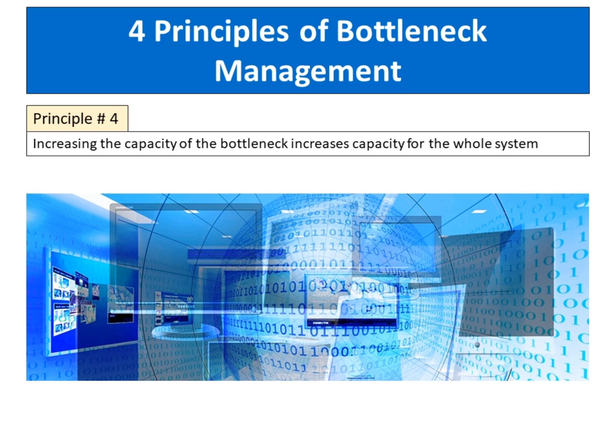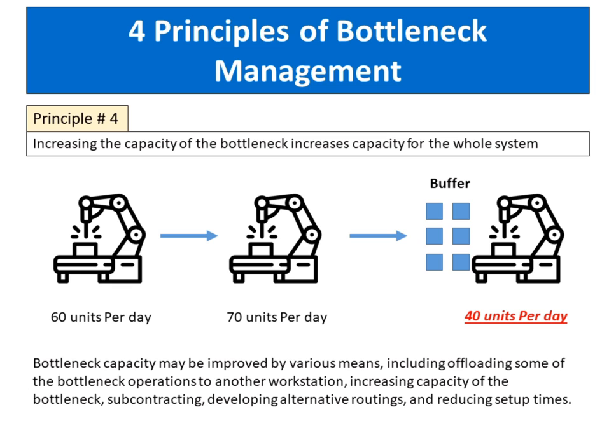Principle number four: increasing the capacity of the bottleneck increases capacity for the whole system. Managers should focus improvement efforts on the bottleneck. Bottleneck capacity may be improved by various means, including offloading some of the bottleneck operations to another workstation, increasing capacity of the bottleneck by adding resources, working longer or working faster, subcontracting, developing alternative routings, and reducing setup times.